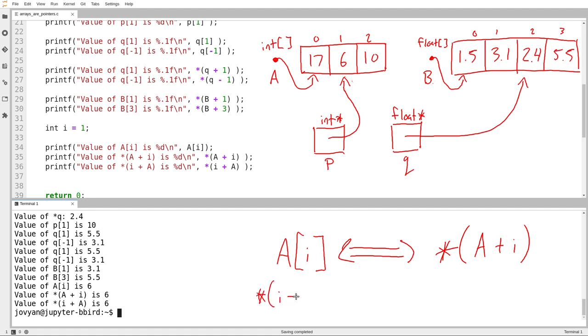doesn't that mean that that should logically be equivalent? If the compiler really does what I'm saying it does, which is every time it sees this, it turns it into this, that means that when it sees something like this, isn't that equivalent to i sub A?